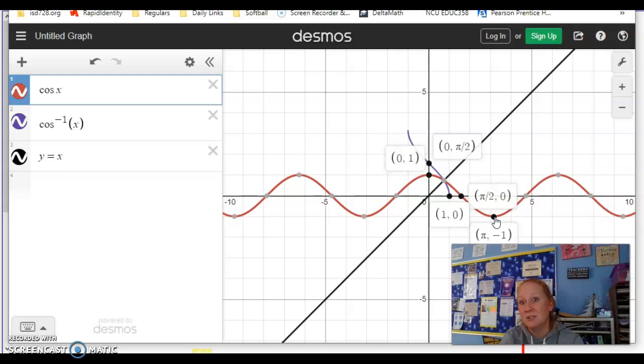Desmos makes things so much easier. That's very hard for me to draw. But here on Desmos, there it is. When you take the inverse, it reflects over the line y equals x. You're taking the x-coordinate and the y-coordinate and swapping them, or in this case, the radians and the cosine value.